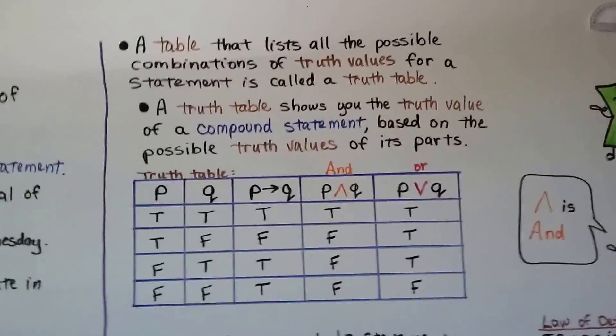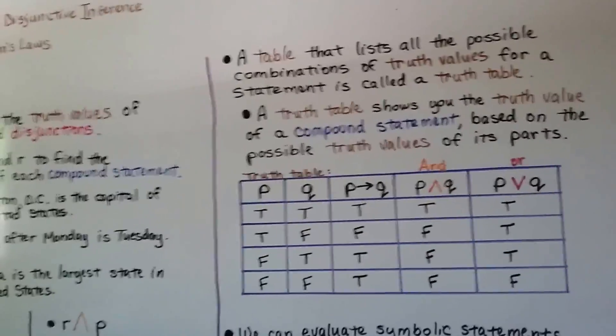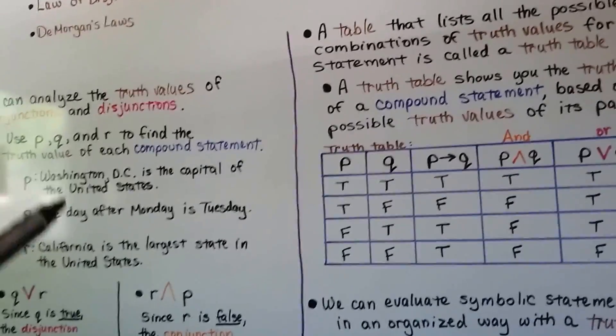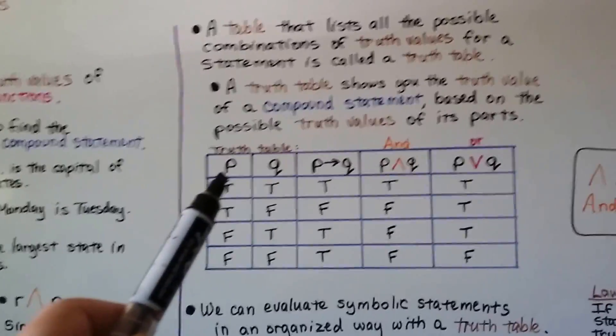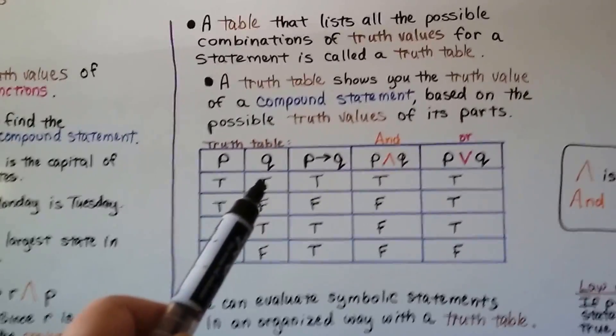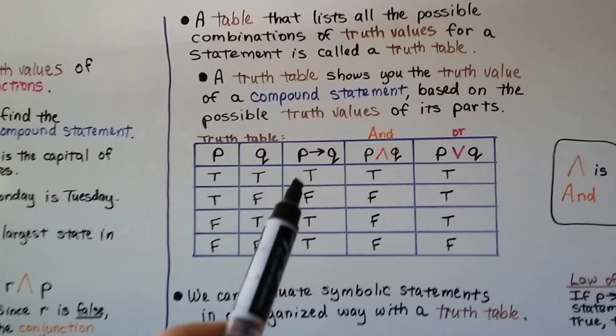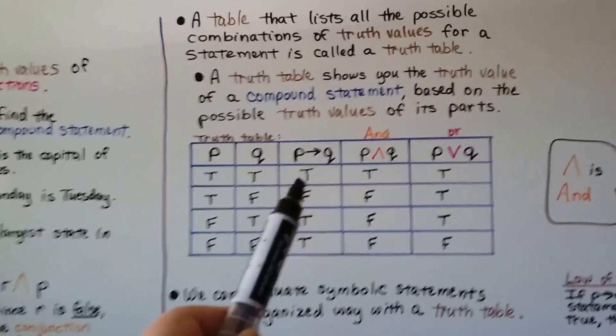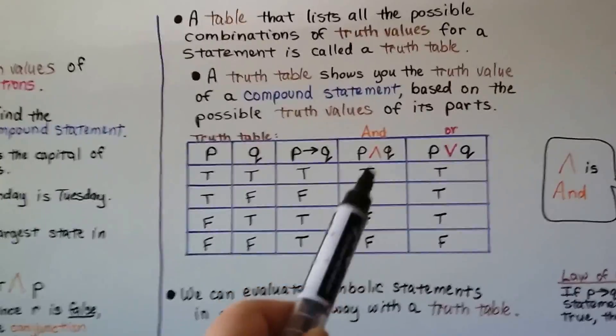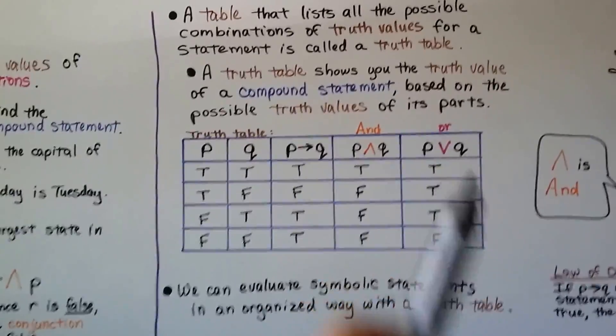So if we had these P and Q statements that are both true, we could say P is true, then Q is true, P therefore Q is true, P and Q is true, and P or Q would be true.